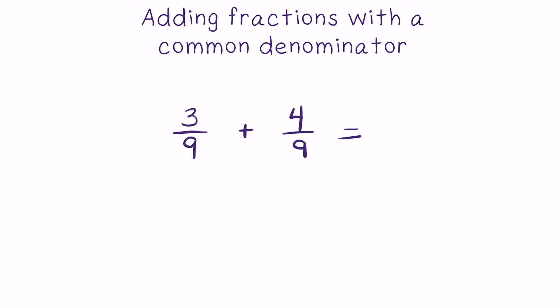Because in this case we do have a common denominator among the addends, ninths and ninths, we can simply add the numerators together and carry the common denominator to the sum. The reason behind this is that we will be adding a certain number of ninths plus a certain number of ninths.